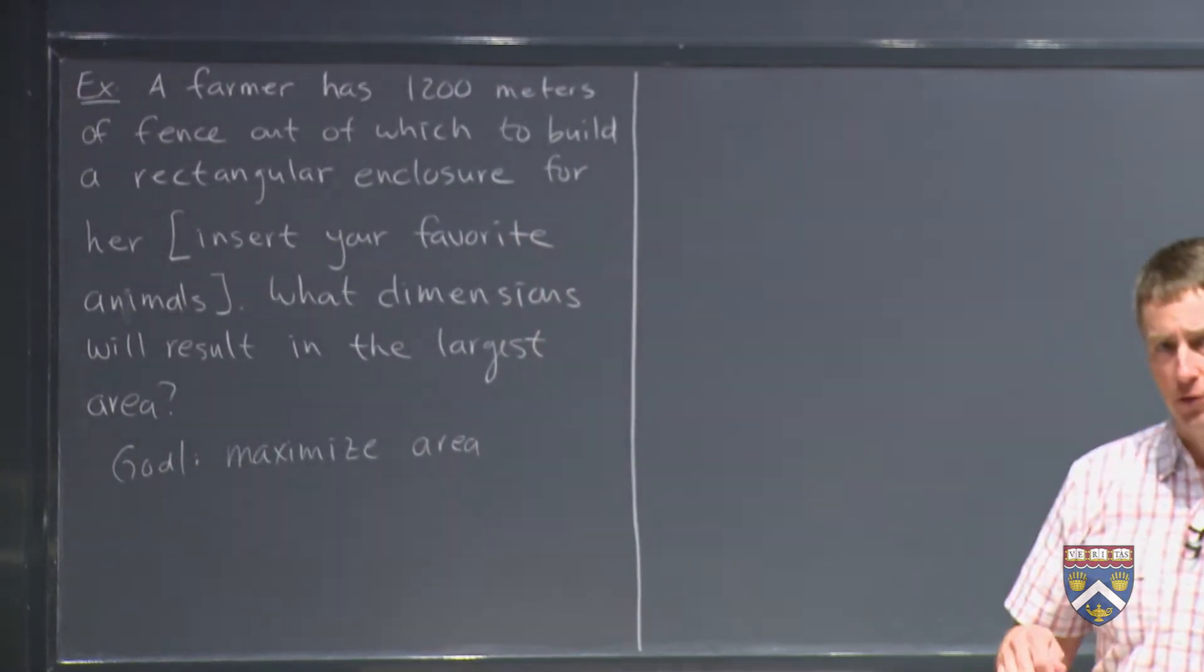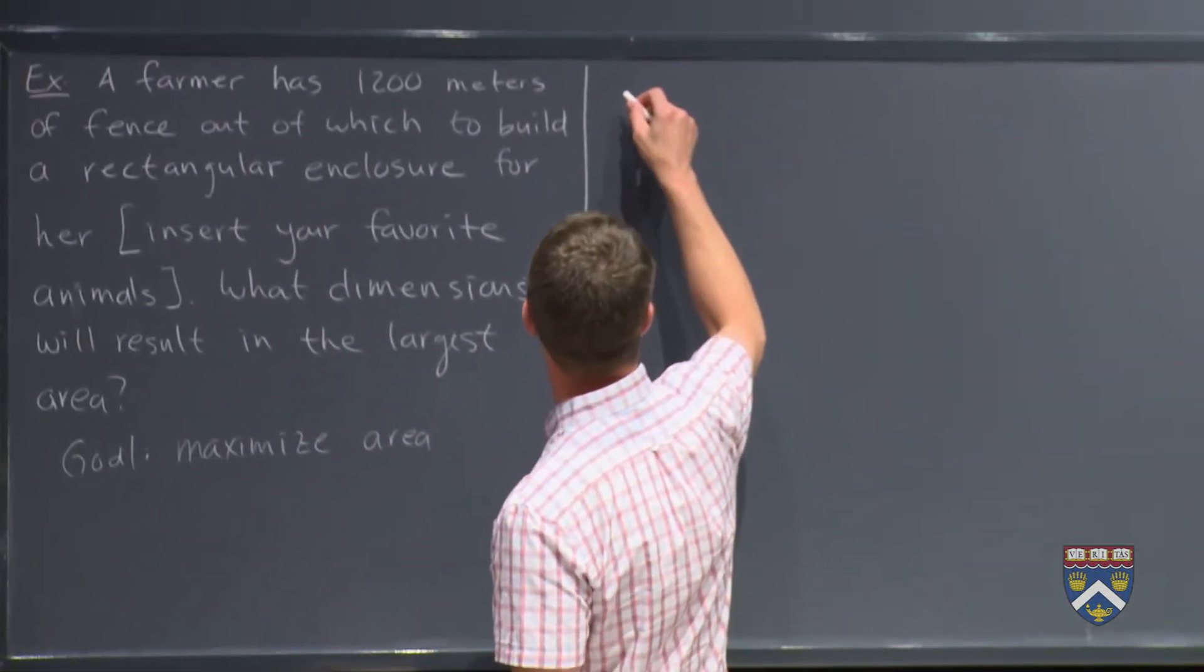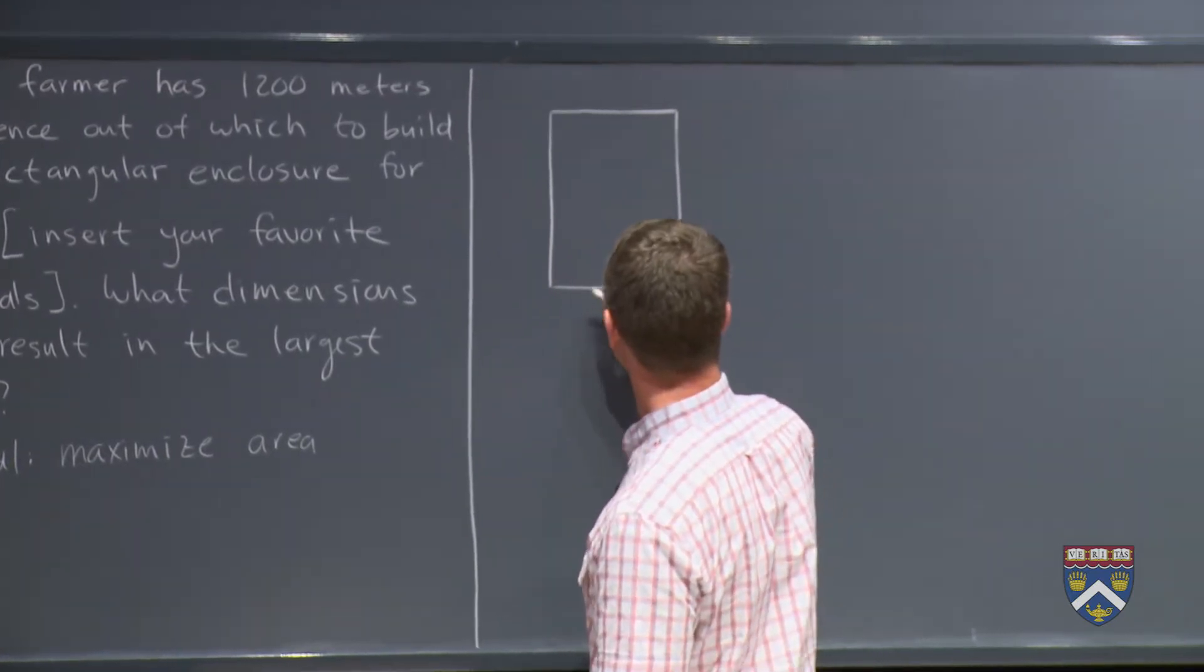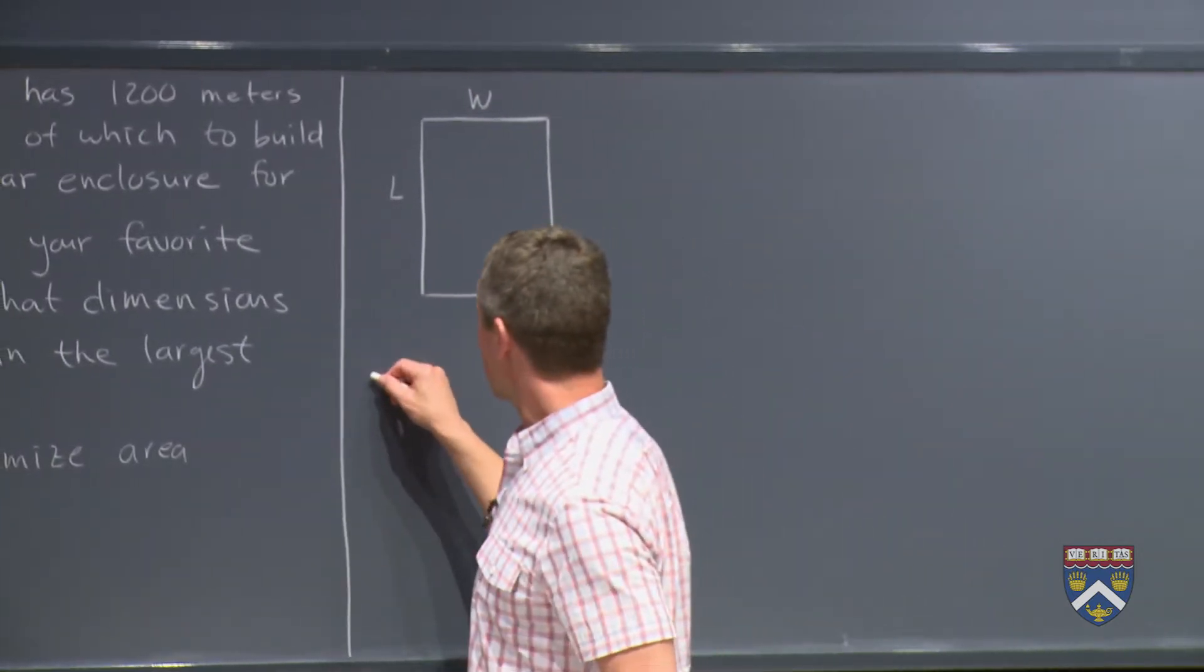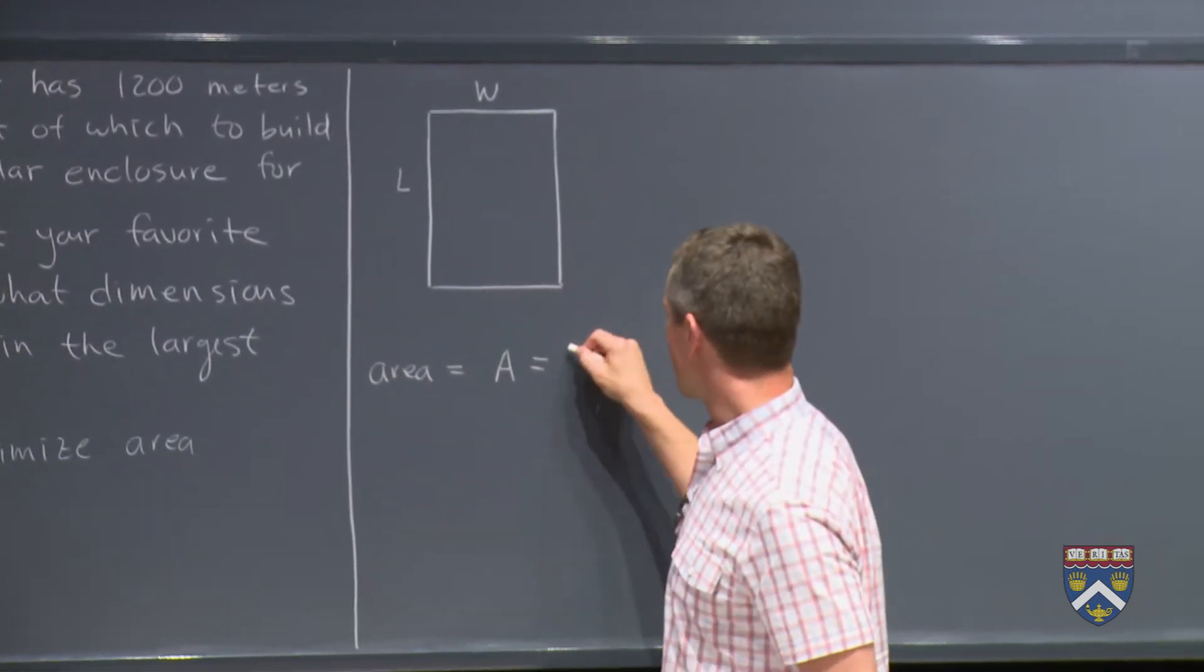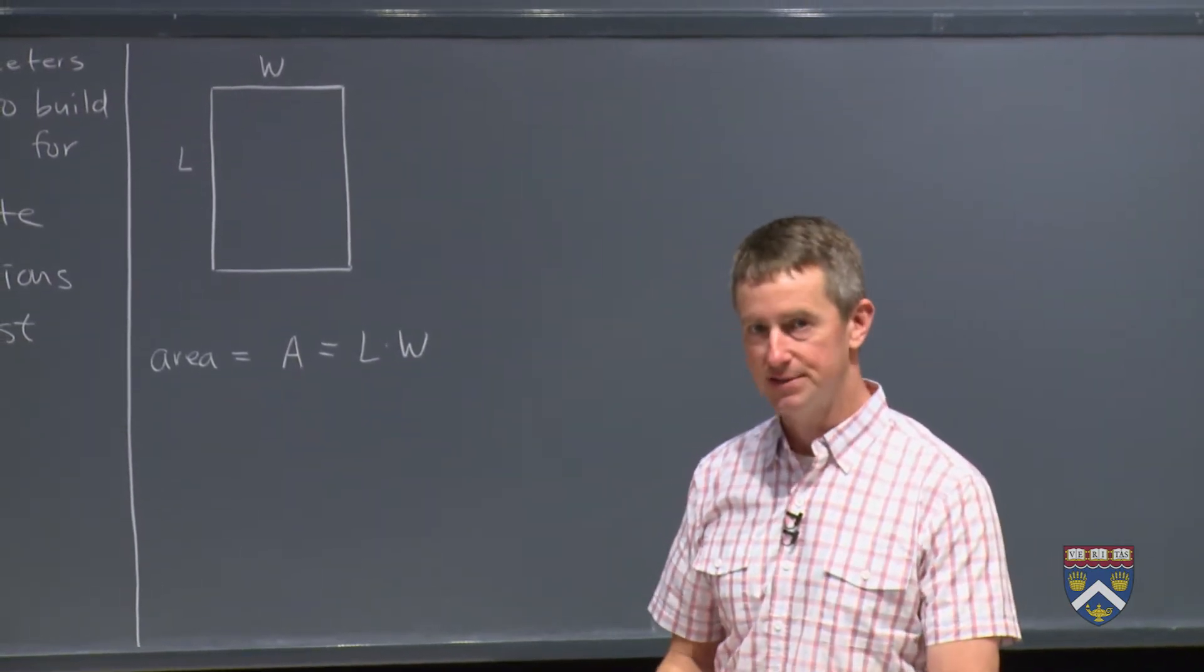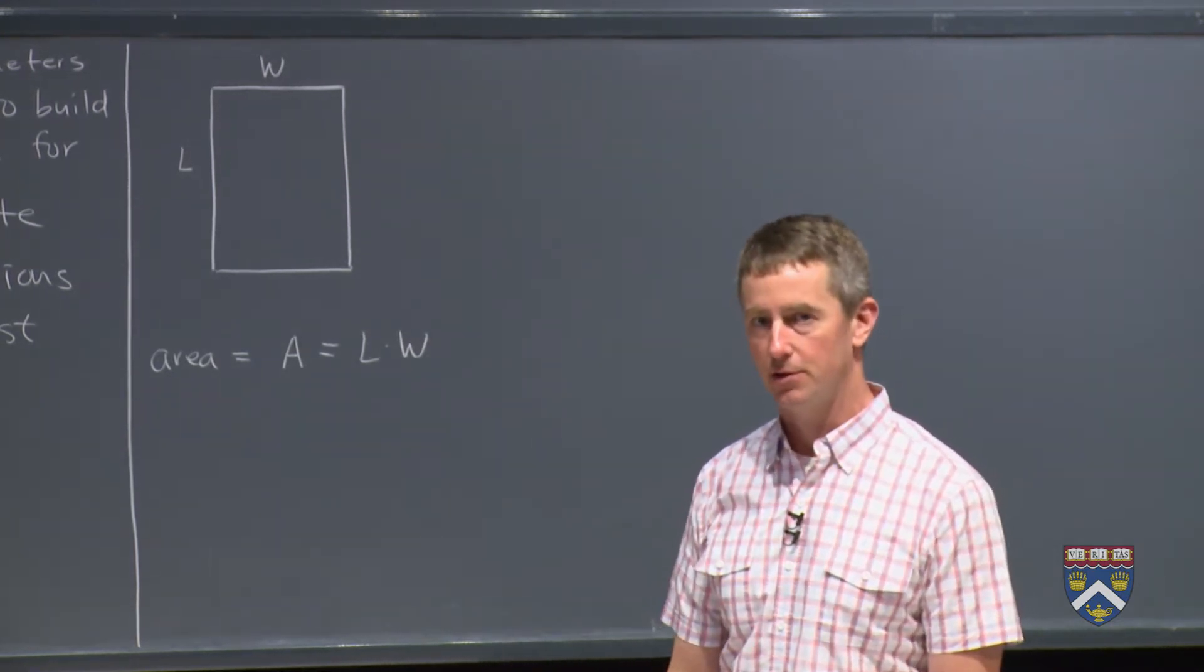So I hope that what you'll recognize as we go through these problems that they're all going to follow a certain pattern. Identify the goal. Now let's write a function for the thing. Let's draw a picture first. So suppose that this is what the pen looks like. And she calls this the length and this the width. So then we have a formula for the area. We could call the area A. And the area of a rectangle is length times width. So this is the function whose maximum we want to find. We know how to find the maximum of a function using calculus. What's the problem though?